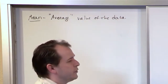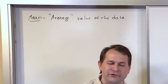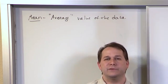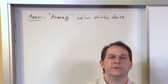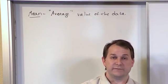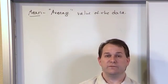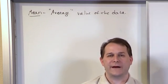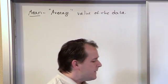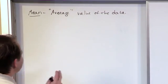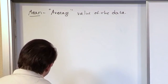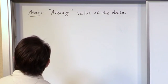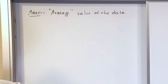In school, when you have grades, you average them together to get your total score, which is a representative number of everything you've done. You average all your grades together — we call that the mean. But in statistics, we need to be very careful because there are specific definitions.